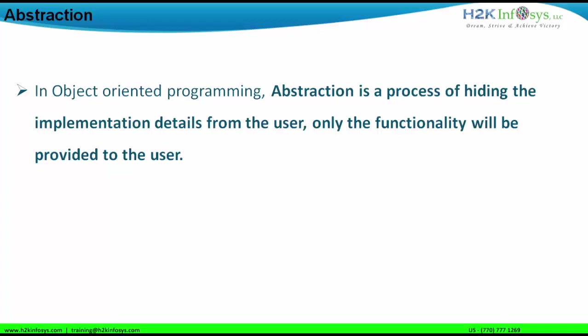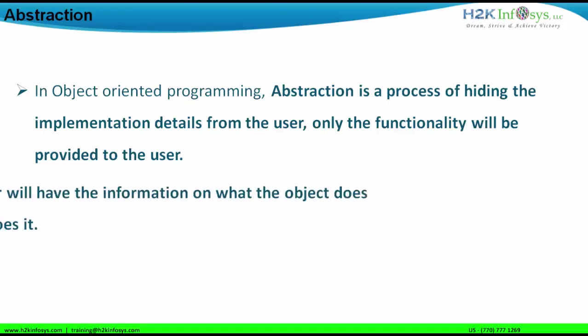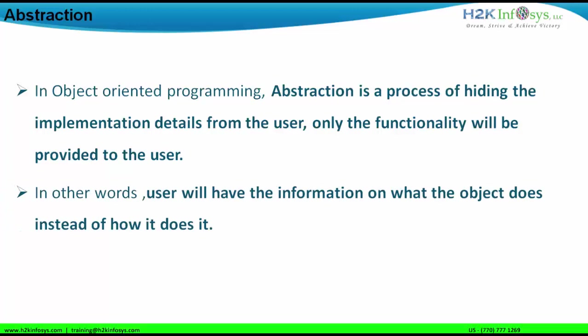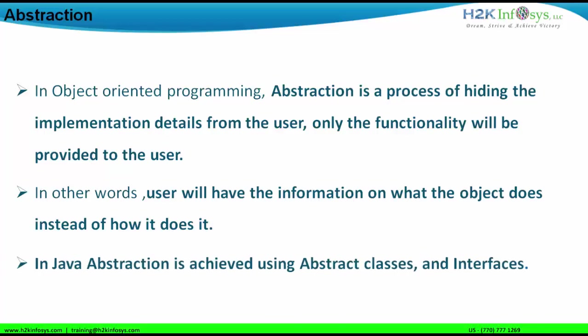What the stuff is going to give in terms of result — that is important. Sometimes we need to abstract certain classes or certain methods. In other words, the user will have information on what the object does instead of how it is doing it. In Java, abstraction is achieved by implementing abstract classes and interfaces.